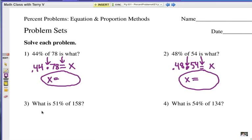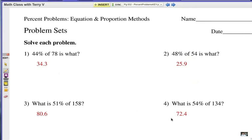Alright, if you think you know what to do, hit pause on this video and try the next two. And I'm going to in a few seconds work it out with you. Alright, number three. What is, so x equals 51 percent, change that to a decimal, .51. And then of, remember, is always multiplication, and 158. So we've got .51 times 158. Number four, what is 54 percent of 134? Multiply that out. Make sure your decimal's in the right place. 80.6 and 72.4. Now those four problems are all done the same way. Let's look at some other examples.